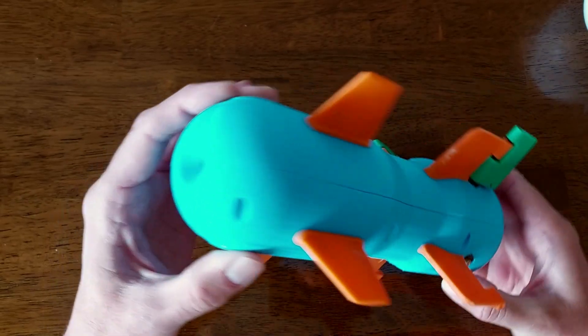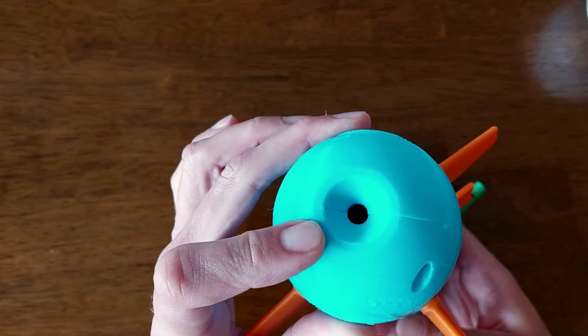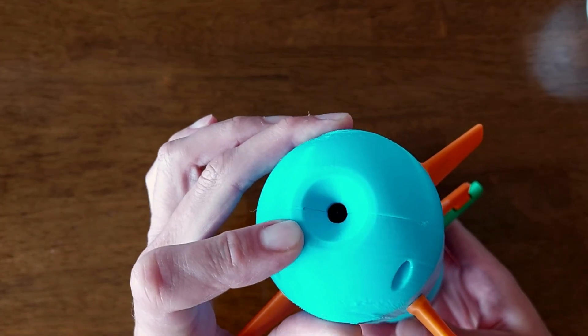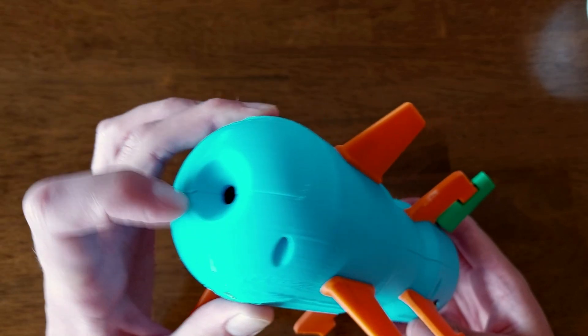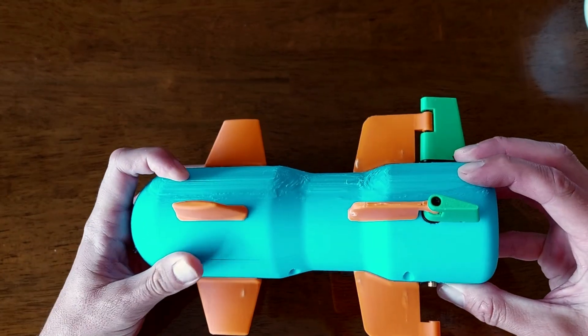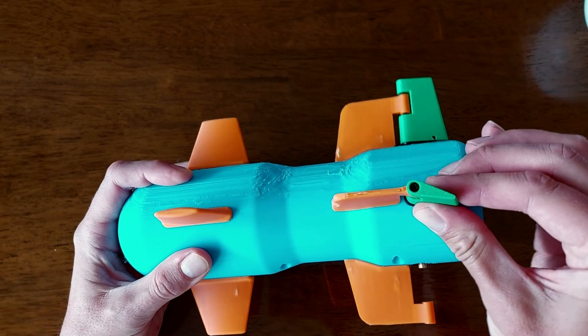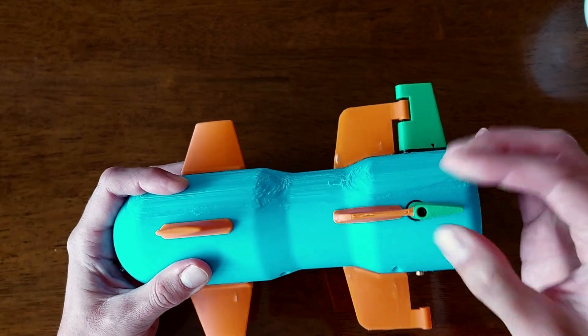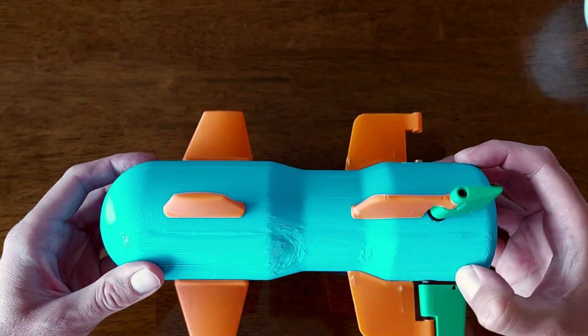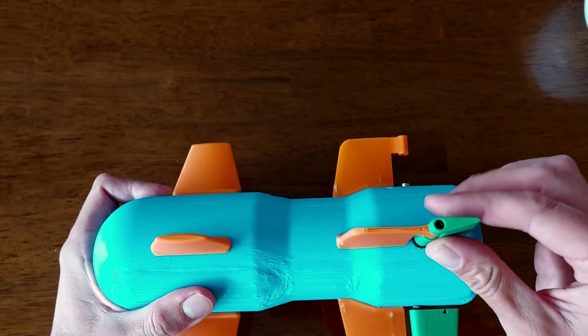So here we go, a self-guided bomb. The idea is that there is a camera in the front looking, tracking hopefully the targets. And there are servos in the back correcting the direction and hopefully it can guide itself to the target.